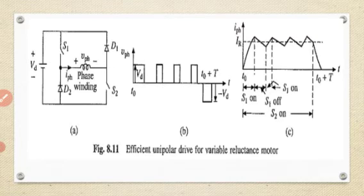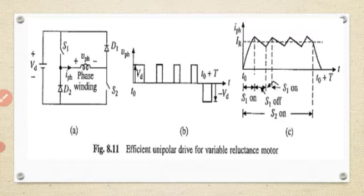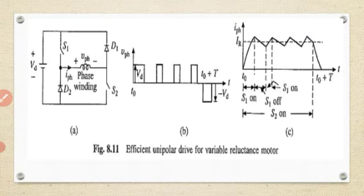An efficient unipolar drive circuit capable of providing fast current buildup and decay uses the chopper principle. The chopper principle is simply obtaining variable DC from a fixed DC source, as you have already studied in power electronics. Each phase employs a similar circuit, and the DC source voltage can now be much larger than in the previous drive circuit discussed.